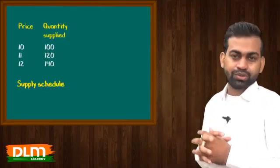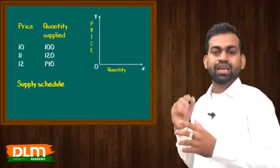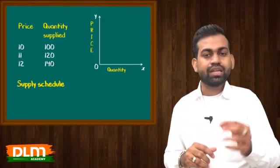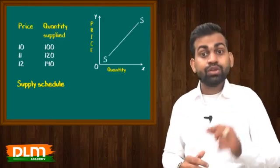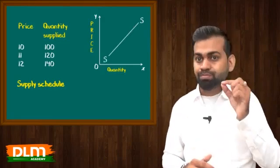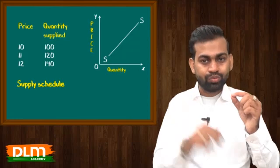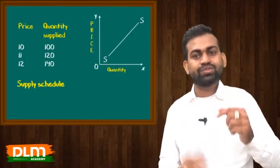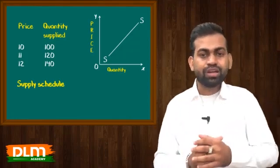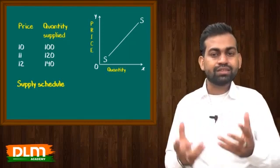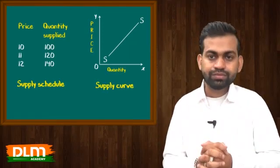Aur agar main isi ka graph bana doon — x-axis aur y-axis. X pe kya hai? Quantity. Y pe price. Aur ek upward sloping curve banta hai, kyunki relationship positive hai. Agar negative hota to downward banta hai, positive hota hai to upward banta hai. This is supply curve.